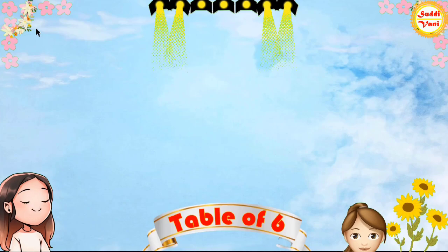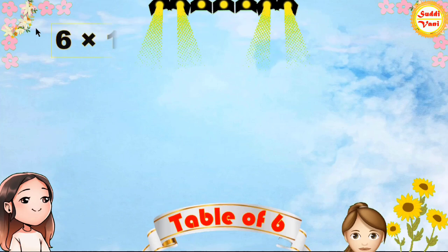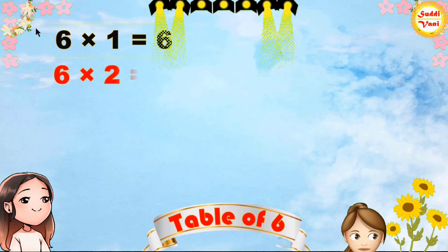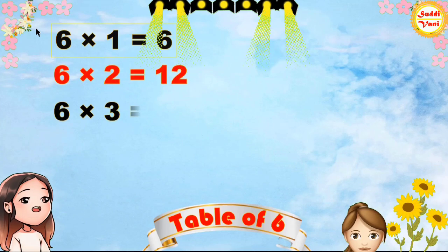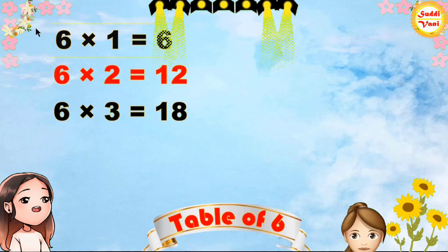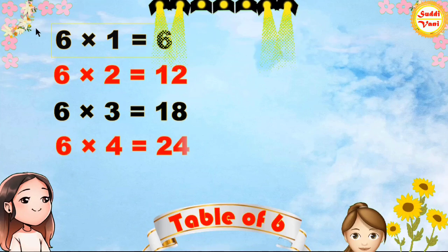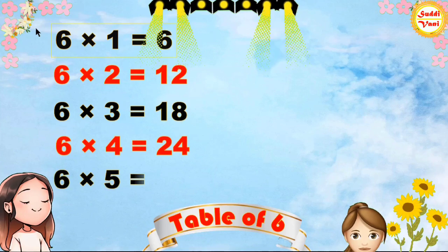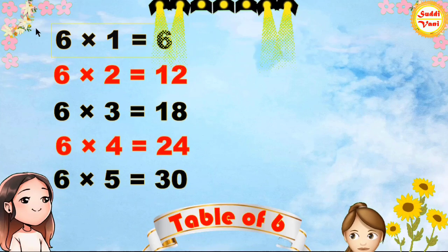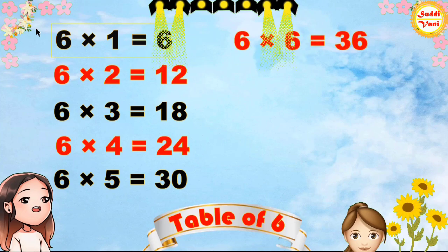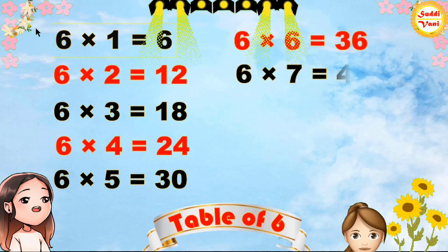Once again: 6×1=6, 6×2=12, 6×3=18, 6×4=24, 6×5=30, 6×6=36, 6×7=42.